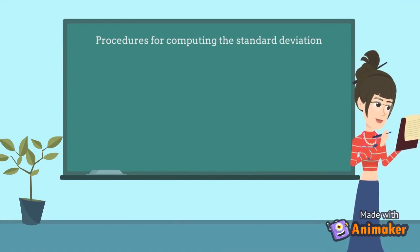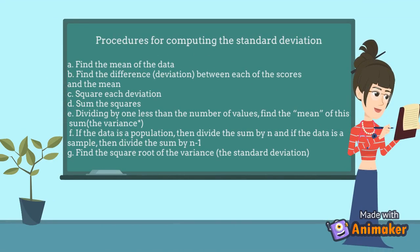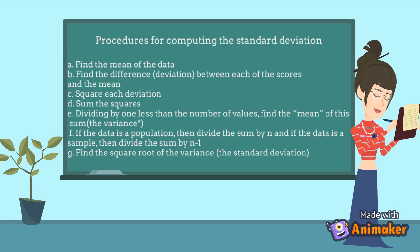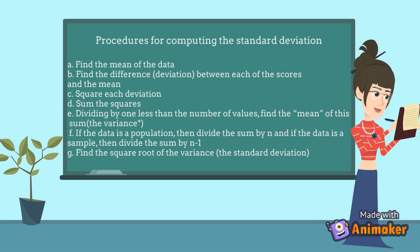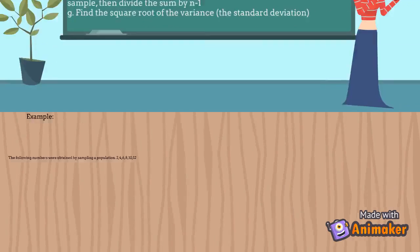Procedures for computing the standard deviation: A. Find the mean of the data. B. Find the difference (deviation) between each of the scores and the mean. C. Square each deviation. D. Sum the squares. E. Find the mean of this sum — the variance. If the data is a population, divide the sum by n. If the data is a sample, divide the sum by n minus 1. G. Find the square root of the variance — the standard deviation.